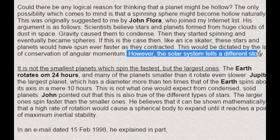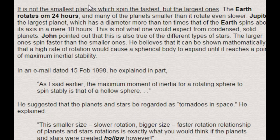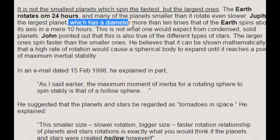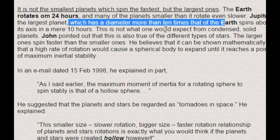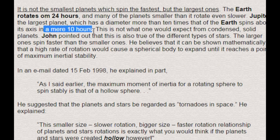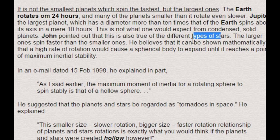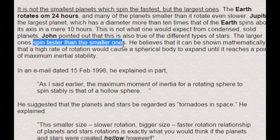However, the solar system tells a different story. It is not the smallest planets which spin the fastest, but the largest ones. The Earth rotates in 24 hours, and many planets smaller than it rotate even slower. Jupiter, the largest planet, with a diameter more than 10 times that of the Earth, spins about its axis in a mere 10 hours — not what one would expect from condensed solid planets. John Flora pointed out that this is also true of all star types: larger ones spin faster than smaller ones.